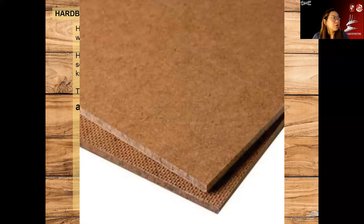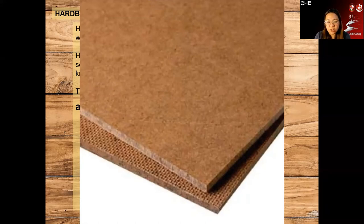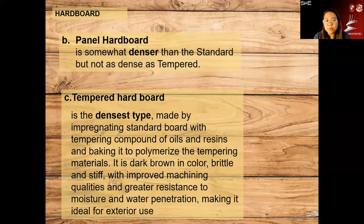This is the drywall partition in our house — it's about 40 to 50 years old. The second floor was built in the 1970s. You can see one side is smooth and the other side is screened. We have panel hard board, which is denser than standard but not as dense as tempered. And then there is tempered hard board, which is the most dense type.